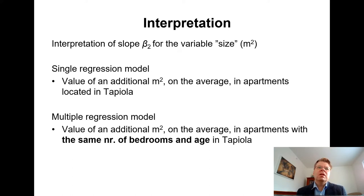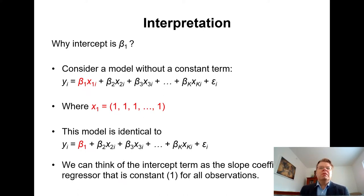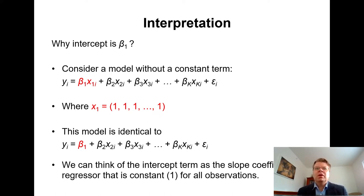In both cases we have the interpretation of the marginal effect, but it's not surprising that the estimated slope coefficient can change when we introduce additional explanatory variables. We shouldn't necessarily expect the slope to be exactly the same. One practical question: why do I denote the intercept term as beta 1? This can be helpful if you later look at the matrix-vector representation, where beta 1 can be thought of as the product of beta 1 and an explanatory variable x1 that takes the value of 1 for every observation.